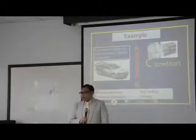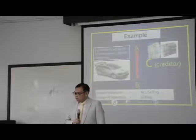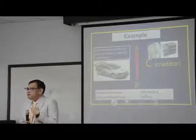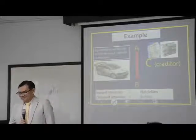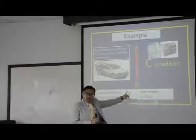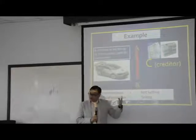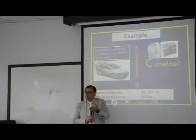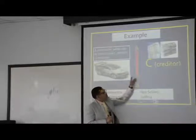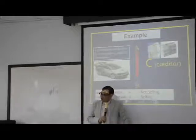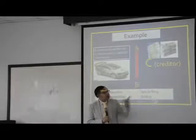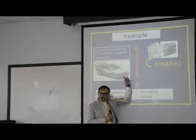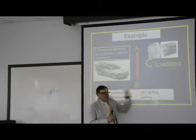So A knows that if the car still belongs to him, then C can just enforce the debt out of his car. So he pretends to sell this car to B. And in this case, B knew this. B just tried to help A. A pretends to sell this car to B in order to deceive C — that now the car does not belong to me. The car belongs to B, so you, C, cannot enforce the debt out of this car anymore, because now the car belongs to somebody else — in this case, to B.